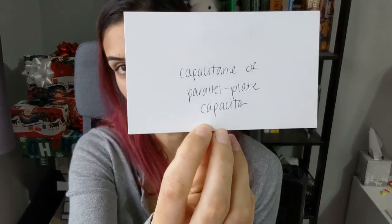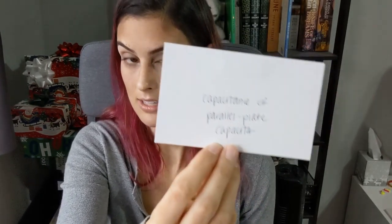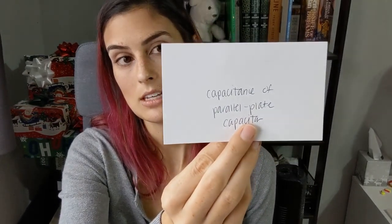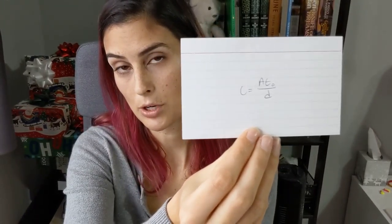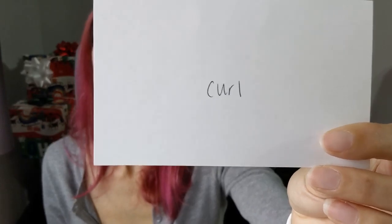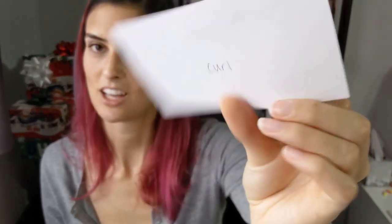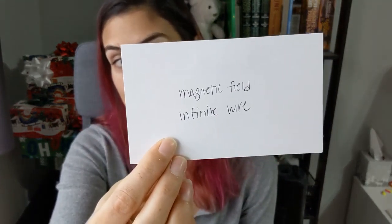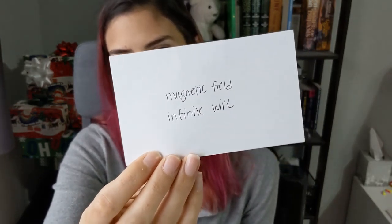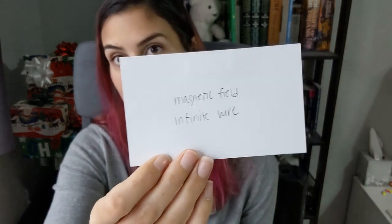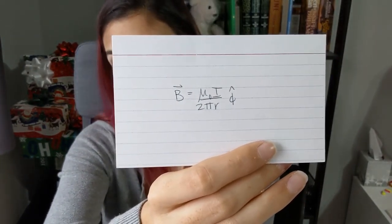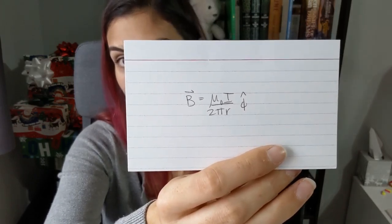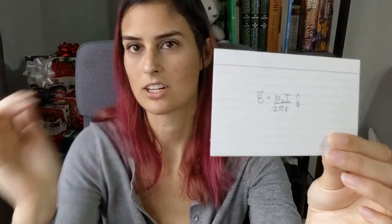The capacitance of a parallel plate capacitor without an insulator: C equals A epsilon naught over d, where A is area and d is the separation of the plates. Curl is just the del operator cross a vector. The magnetic field from an infinite wire: B equals mu naught I over 2 pi r in the phi-hat direction — so r is how far you are from the wire and phi-hat means the field goes around it.